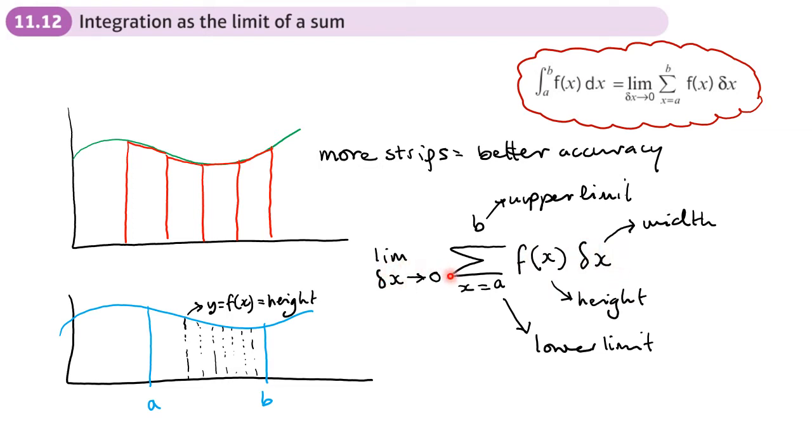So this delta X approaching zero is basically saying as the width approaches zero, as the width of the strip approaches zero. So as the width approaches or tends to zero.